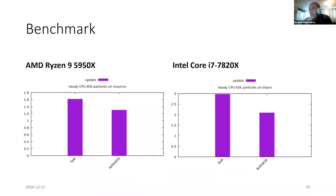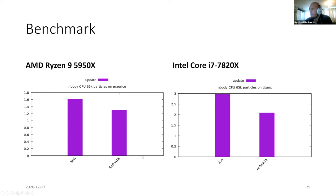In a close-up benchmark comparing SoA against AoSoA-16, we can see roughly a 15–20% gap in favor of AoSoA-16, and the speedup appears slightly larger on Intel cores.